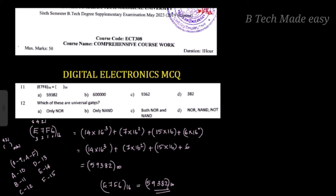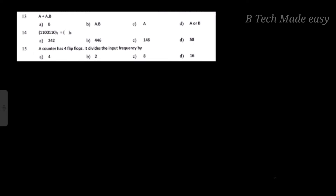Next question: which of these are universal gates? Option A is only NOR. Option B is only NOT. Option C is both NOR and NOT. Option D is NOR, or NAND and NOT. If you are aware of this, only NAND — NAND and NOT are universal gates. So the answer is option D; option C is not the answer.